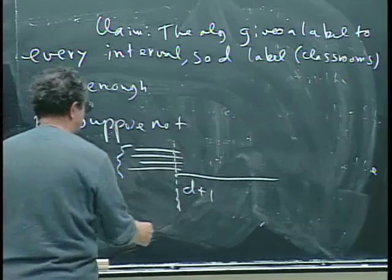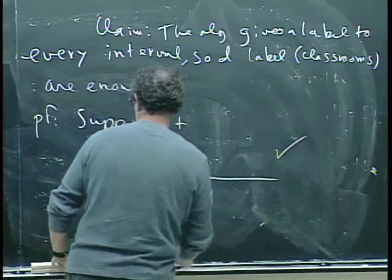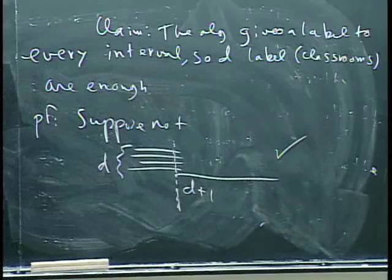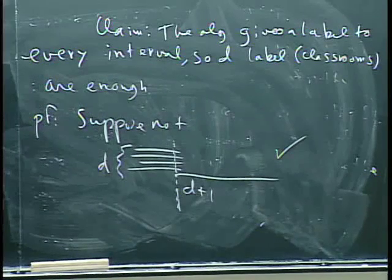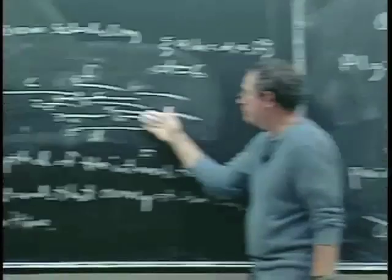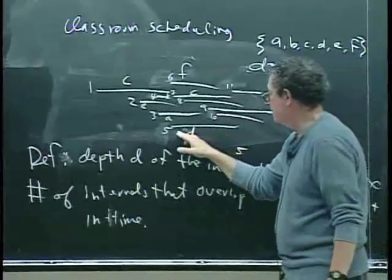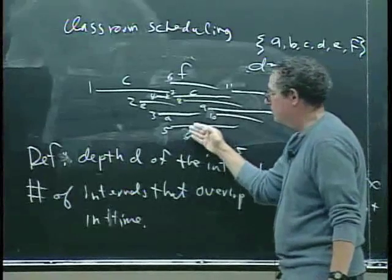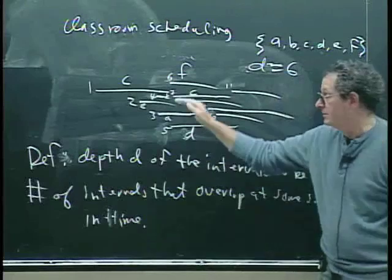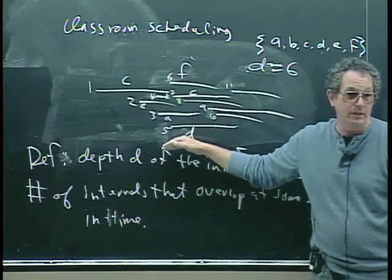D, so proof is done. And therefore, the algorithm works. Therefore, D is sufficient. So it's a cute algorithm and a nice way of proving that the minimum number of classrooms that are needed is exactly equal to the depth, is actually exactly equal to D. So it's a good idea.